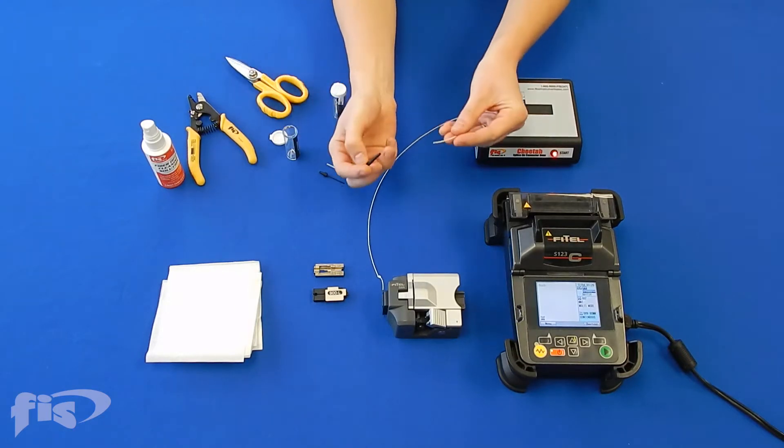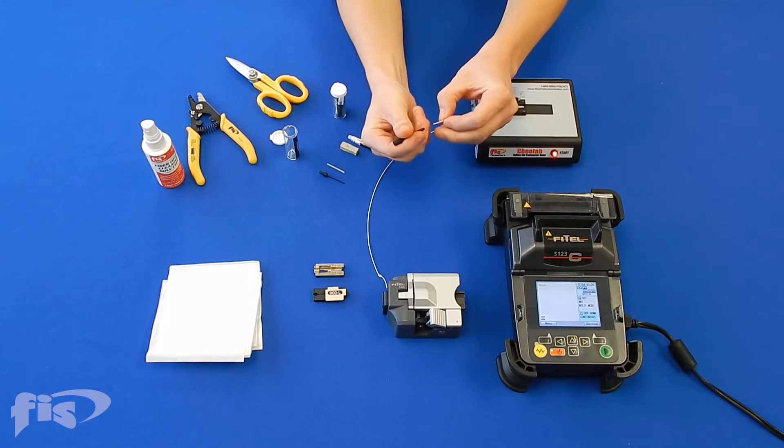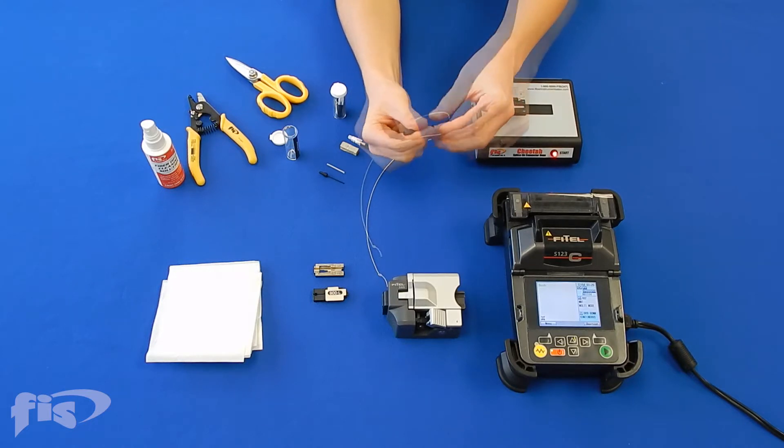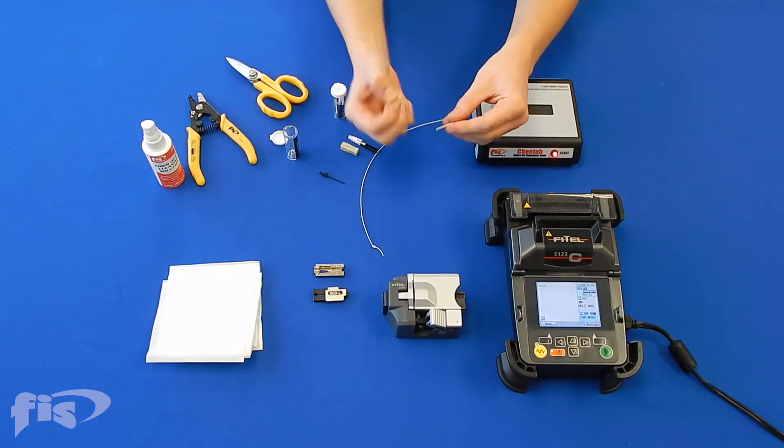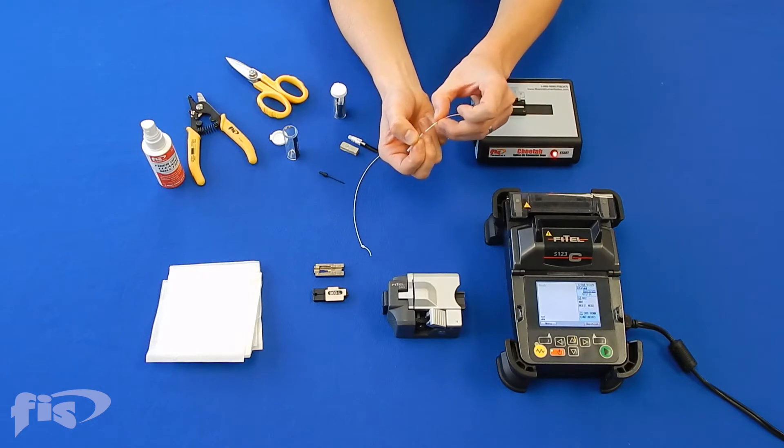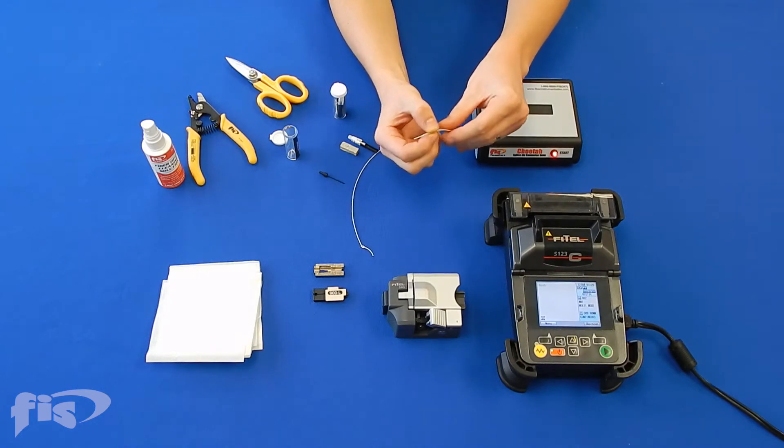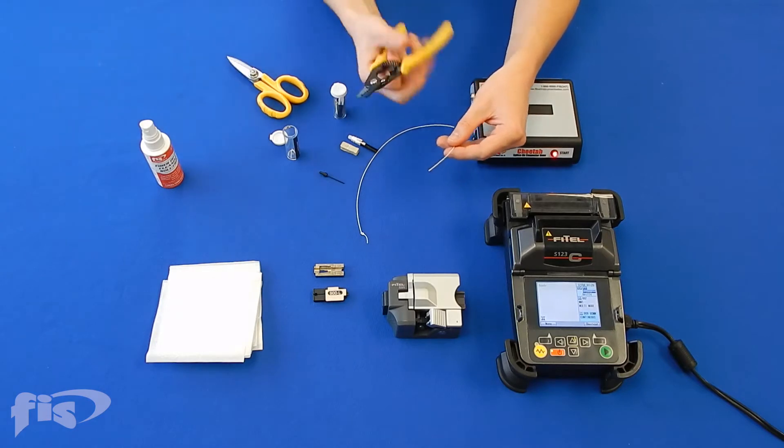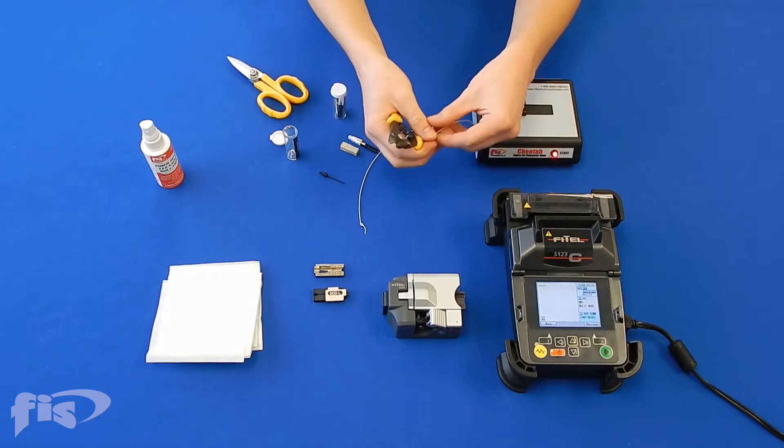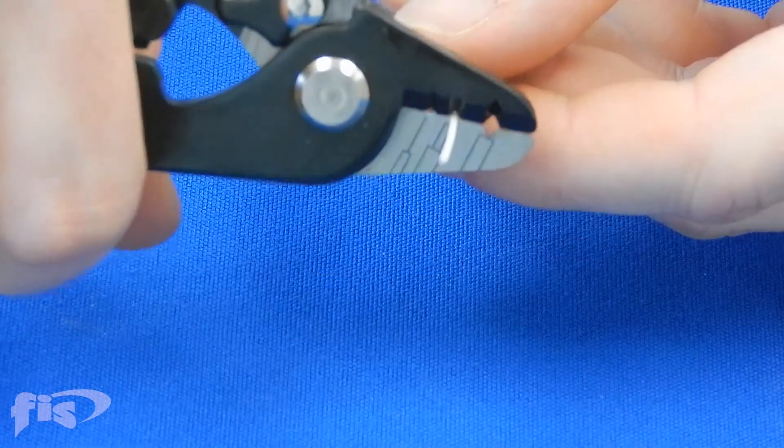Begin by sliding the 900 micron boot and splice protection sleeve onto the field fiber. Next, strip an inch to an inch and a half of the 900 micron jacket from the end of the field fiber.